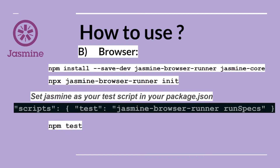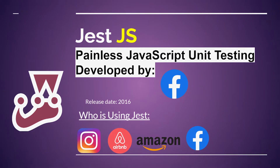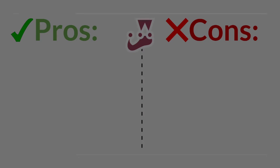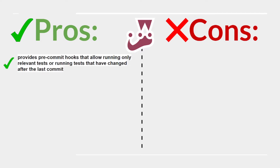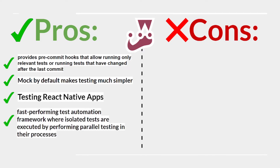Jest is a painless JavaScript unit testing framework developed by Facebook, released in 2016. Used by Airbnb, Amazon, Facebook, and Instagram. Pros: provides pre-commit hooks to run only relevant or changed tests, mocking by default makes testing simpler, great for testing React Native apps, and fast-performing test automation with parallel isolated test execution.